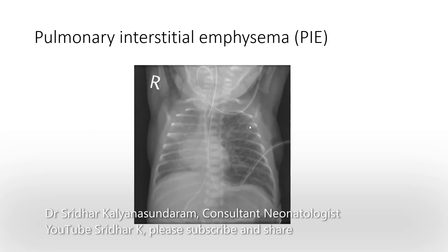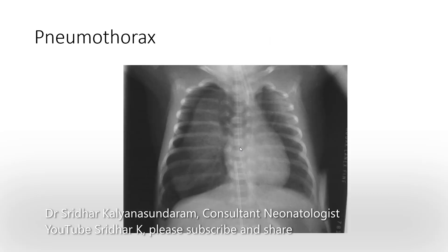This X-ray illustrates pulmonary interstitial emphysema. This is not seen that commonly these days because of the regular use of antenatal steroids and early appropriate ventilation without overdoing the pressures. This baby has a chest drain, so it probably had a PIE-associated air leak as well.